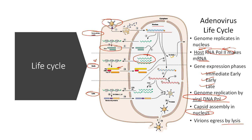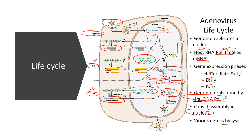Inside the nucleus, the viral DNA polymerase along with accessory proteins helps replicate the viral DNA, producing more and more copies — marking the late stage. Once viral DNA is produced, it is transcribed into mRNA, which is translated into structural proteins in the cytosol. These structural proteins build the capsid coat and are transported back into the nucleus, where the viral DNA is packaged inside the capsid. Once the complete viral structure is formed, it is released from the nucleus using protease and lyses the host cell, releasing new virus particles.